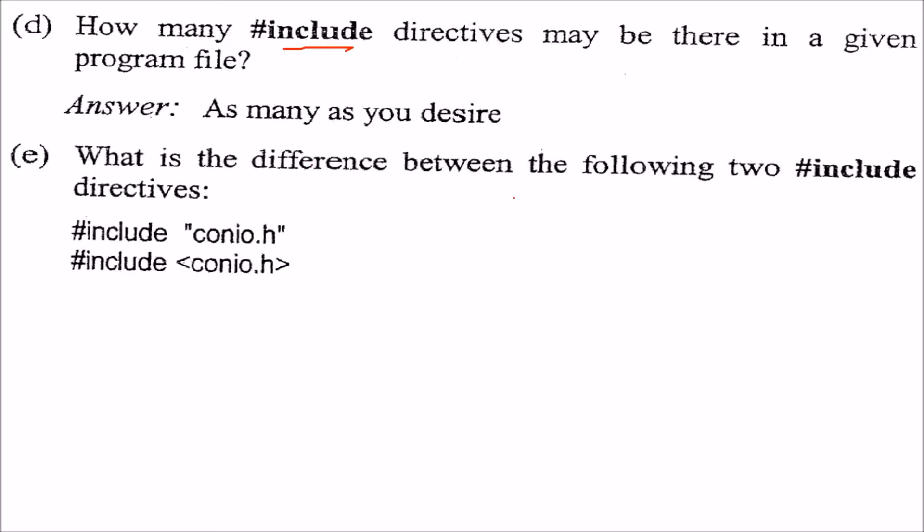What is the difference between the following two #include directives? In fact, if you take conio.h or any file you include here with double quotes and the angle brackets...